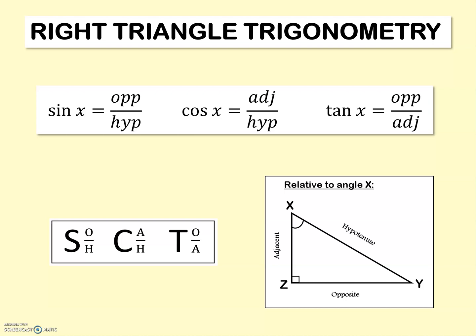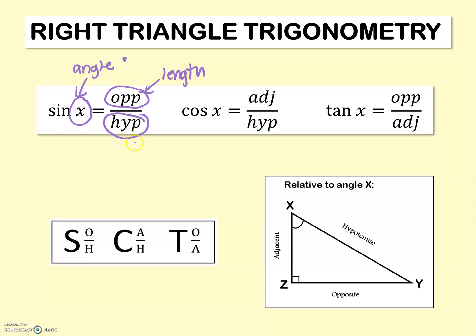Just as a little recap, we have our SOHCAHTOA, and you should really get into the practice of viewing this as your formulas. When you have a triangle, you're going to be given certain information — certain values. You should begin to see, for example, sine of X equals opposite over hypotenuse. X always represents the angle measure that you're given. Opposite is the length of the opposite side, and hypotenuse represents the length of the hypotenuse. You'll be able to fill that in as if it's an equation — it's your formula.